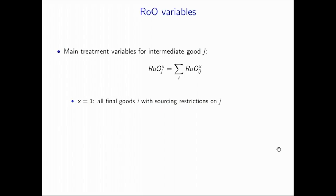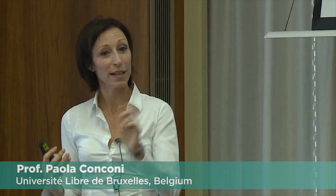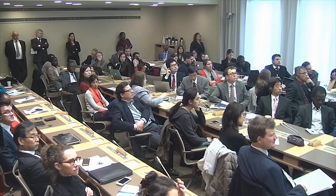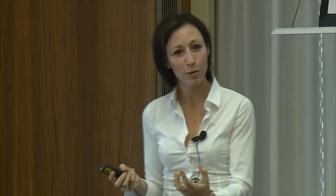The first treatment variable is a simple count of how many rules of origin restrict the sourcing of a particular intermediate good J — you look at all the ROO_IJ for all the final goods that impose restriction on that intermediate and simply count them. The second treatment removes irrelevant rules — those for which the preference margin is zero. There are many final goods for which there is no difference between the preferential and MFN tariff rate, so the producer has nothing to gain by complying; these should not be relevant rules. The third treatment — our preferred treatment — focuses on rules that are both relevant, meaning the preference margin is positive, and strict, meaning there's no value-added alternative rule that you can use to get origin.